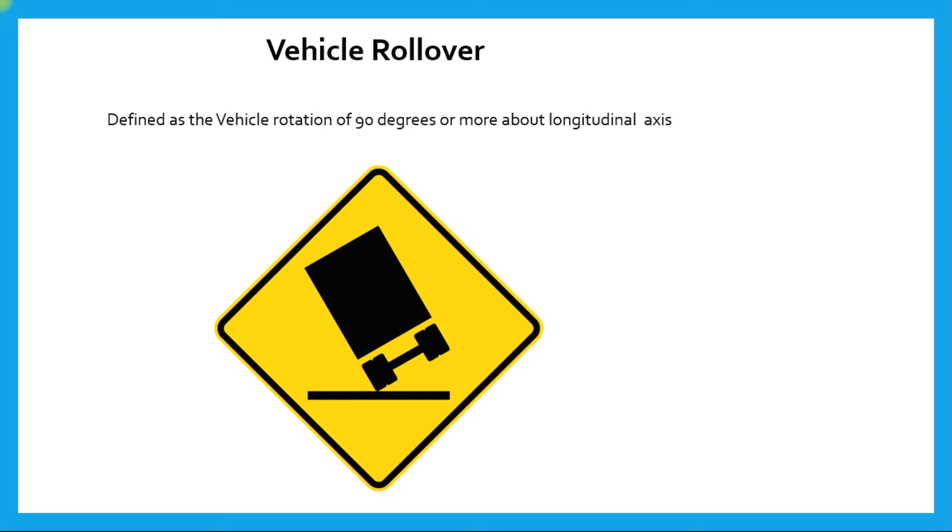The rollover definition is generally defined as the vehicle rotation of 90 degrees or more about the longitudinal axis. When this rotation of 90 degrees or more happens about the longitudinal axis, it is termed as vehicle rollover.